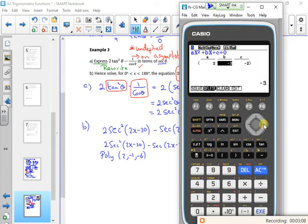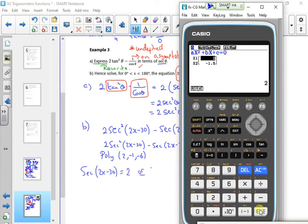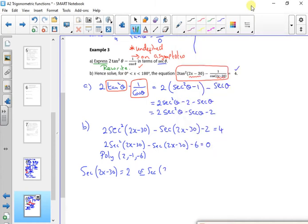So I've got 2, -1, and -6. So it gives me 2 and it gives me minus a half. Minus one and a half, sorry. So 2 and -1.5. So it gives me sec(2x - 30) = 2, or sec(2x - 30) = -1.5, -3/2.